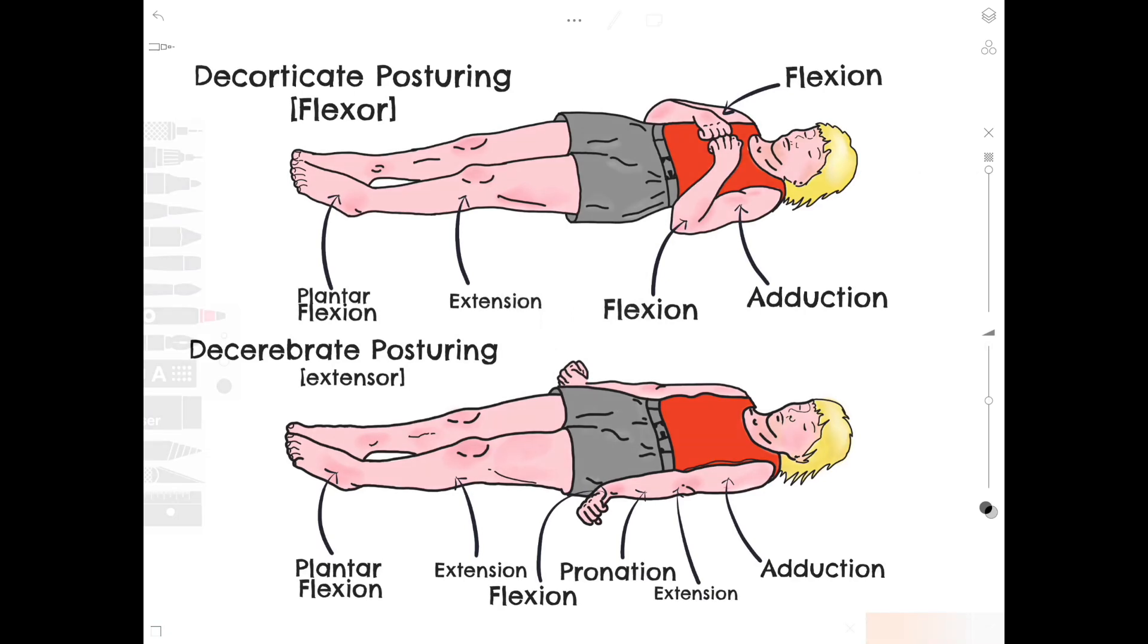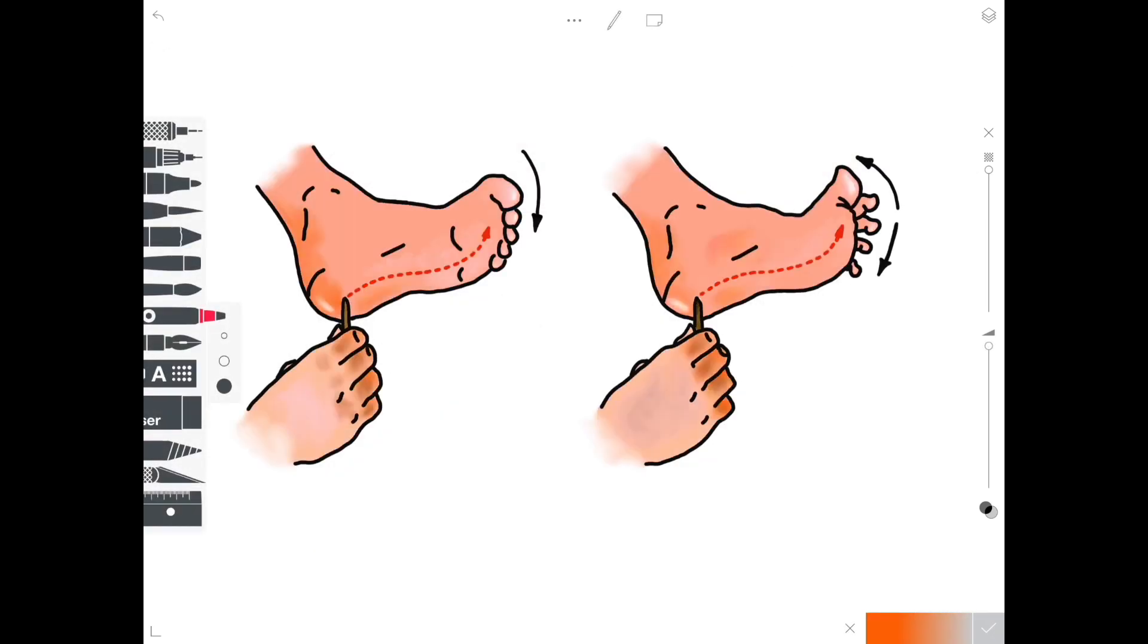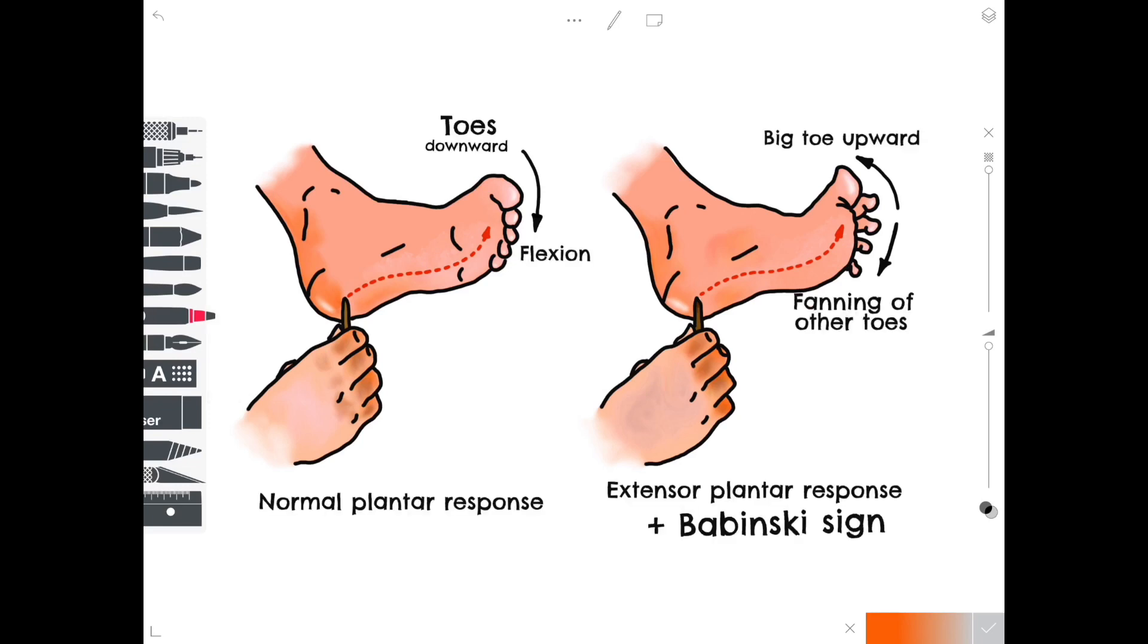The final issue in this case was that we had a positive Babinski sign. This tells us something very generic which is that we have an upper motor neuron lesion. This is the plantar reflex where we would stroke the undersurface of the foot with a blunt object. The normal plantar response would be that the toes would curve downwards and inwards and the foot would invert. A positive Babinski sign would see that the big toe would dorsiflex, move upwards, and the rest of the toes would fan out. This is an abnormal response.